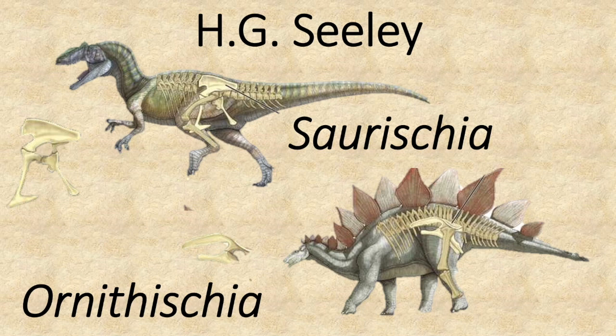Let's get into the grouping of dinosaurs. This was first done by H.G. Seeley. Seeley grouped dinosaurs according to their hip shape. The first group was the Saurischia group — dinosaurs who had lizard-like hips. The other group, the Ornithischia group, included dinosaurs with bird-like hips. The examples shown are the Allosaurus with lizard-like skeletal hips and a Stegosaurus with bird-like hips. These were the overarching groups which were then further broken down into subgroups.